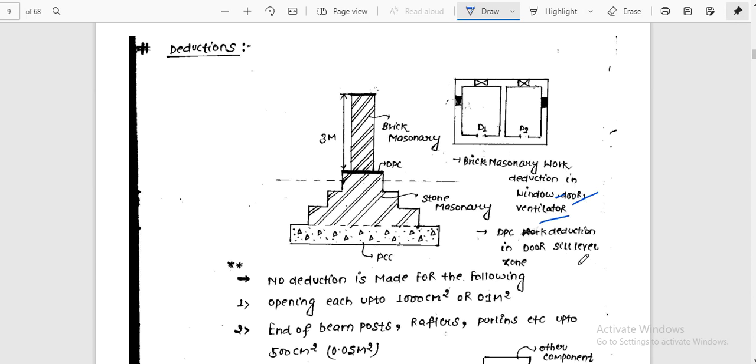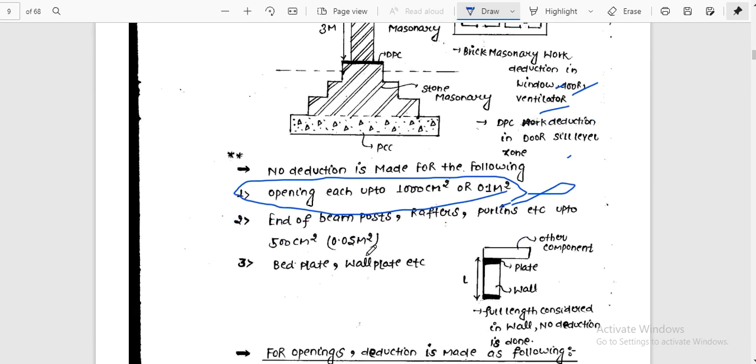For DPC work, there's deduction in door sill level zones. However, no deduction is made for the following: openings up to 1000 cm² or 0.1 m², end of beams and rafters, purlins with area up to 0.05 m², and bed plates and wall plates.